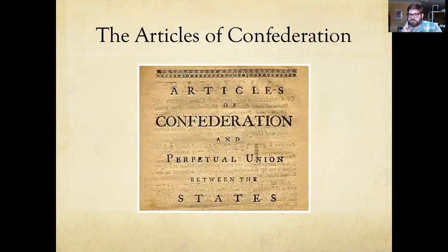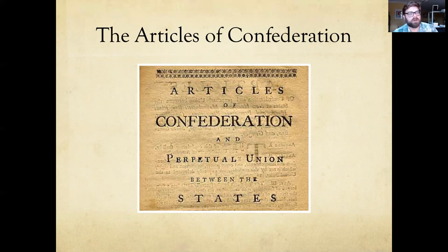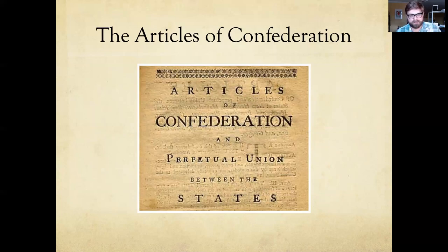The US is left after the war as a new nation, but they don't have the Constitution yet. They have the Articles of Confederation — a flawed document. There's no Supreme Court, every state gets one vote regardless of size, and it's basically impossible to amend because any amendment requires unanimous consent. Leaders of the new nation quickly realize they need a better, more flexible governing document.